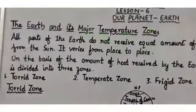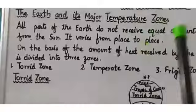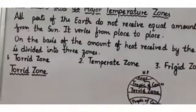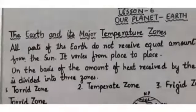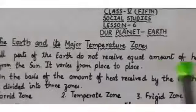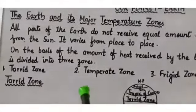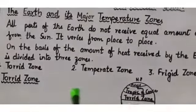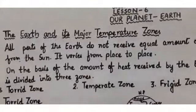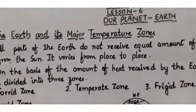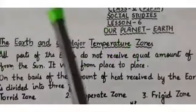You all know that the Earth revolves around the sun and we get heat and energy from the sun. Now, all parts of the Earth do not receive equal amounts of heat from the sun. Why? Because the Earth is spherical in shape, the rays of the sun do not reach all parts of the Earth equally.